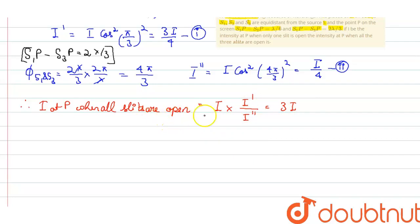When all the three slits are open, the intensity is 3i. Our answer is 3i. Thank you.